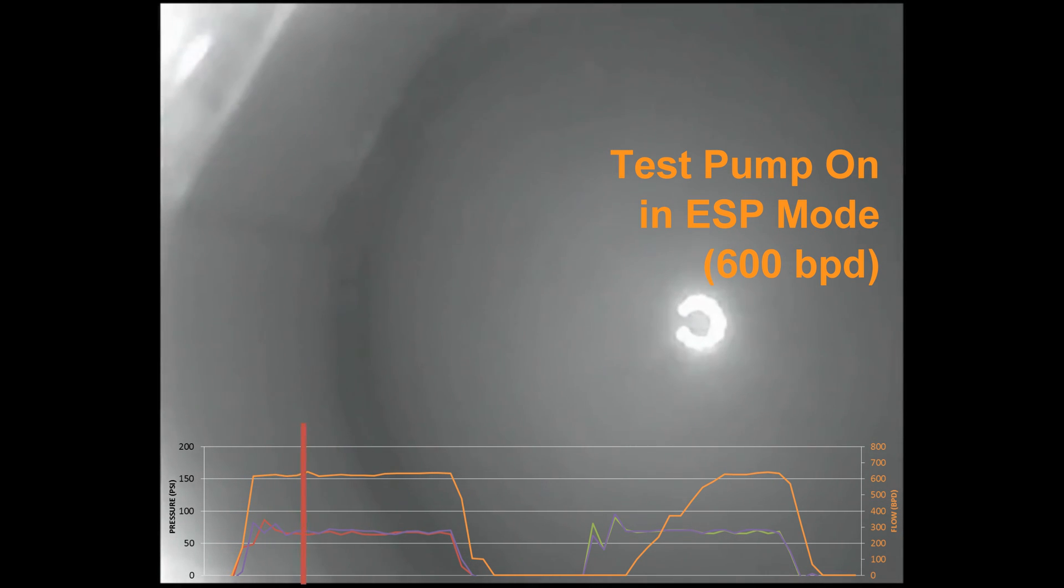The Y-Check operates with pressure differentials of 50 to 7,500 psi and functions in both vertical and horizontal well applications.